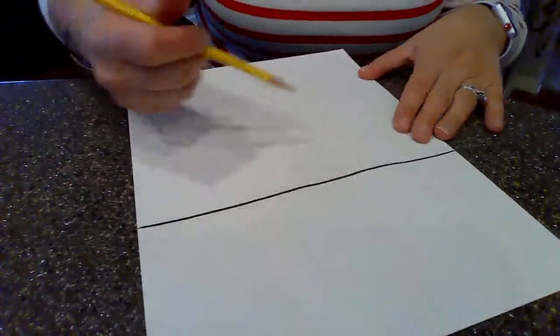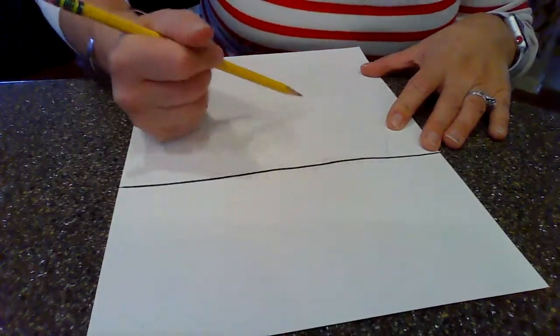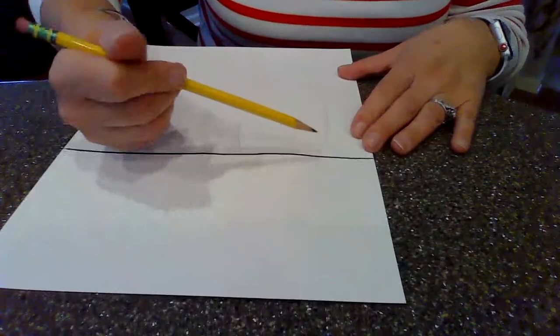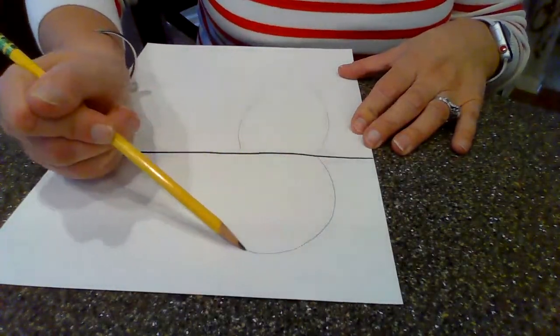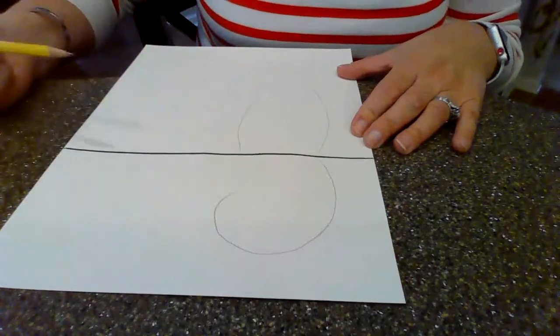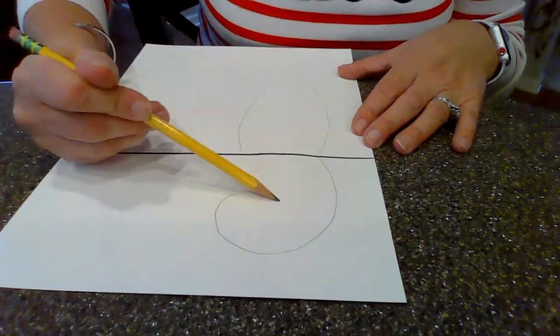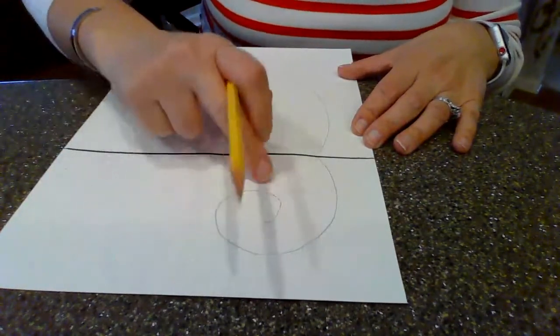But what you want to make sure of is if you are doing that curly cue tail, let me flip my paper over for a second. If you are going to do that curly cue tail, when you do it, you're going to make a big curly cue. Don't go too far. We're just going to go in one time.